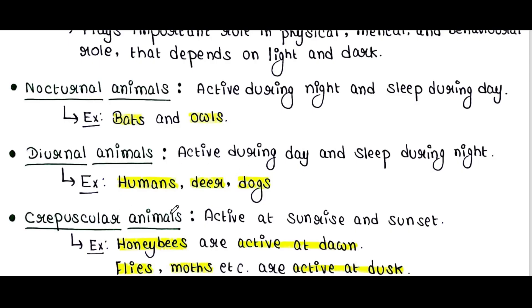Crepuscular animals are active at sunrise and sunset. Honeybees are active at dawn. Flies, moths, etc. are active at dusk.